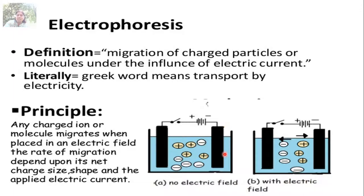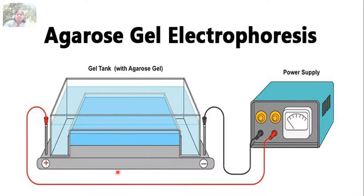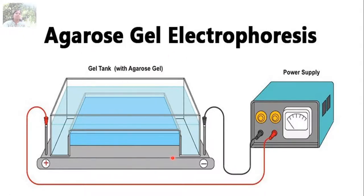You can see here the movement of charges between the electrodes; both cations and anions are present. When the current is passed, they move towards the opposite poles — this is how separation occurs depending upon the charges on proteins. Agarose gel electrophoresis is usually employed for nucleic acids; for proteins, SDS-PAGE uses a vertical type of electrophoresis. For larger molecular size proteins, agarose gel electrophoresis is used; for smaller molecular size proteins, polyacrylamide gel electrophoresis is used.